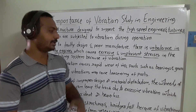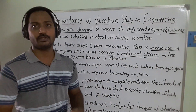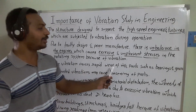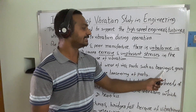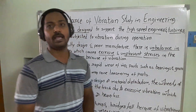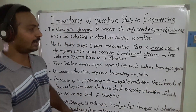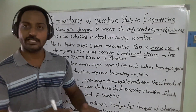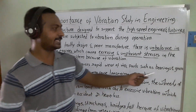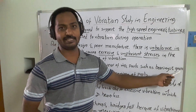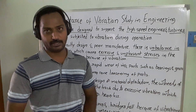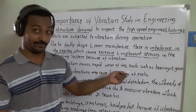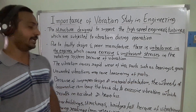The next point is that vibrations cause rapid wear of machine parts such as bearings and gears. As we know, these come under power transmitting or energy transmitting devices. Bearings are the supporters and gears are the transmitting components, so in this case, excessive wear and tear will occur because of the vibrations.